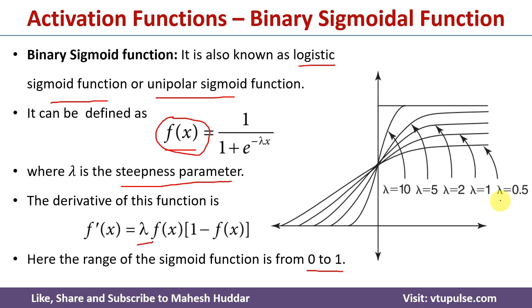If the steepness parameter is equal to 0.5, this is how the curve of a binary sigmoid activation function looks like. If the steepness parameter is equal to 1, this is how the curve looks like, and so on.